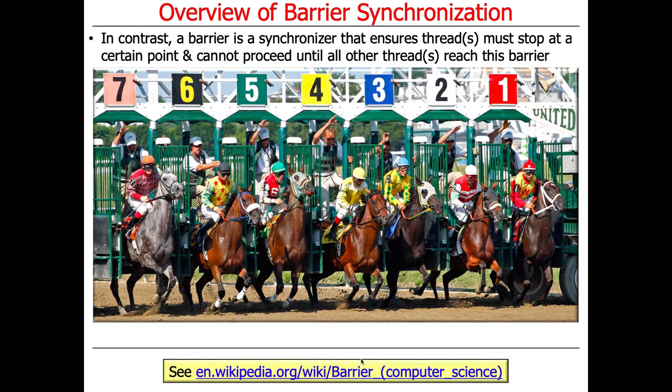In contrast, a barrier is a synchronizer that ensures one or more threads have to stop at a certain point, and it doesn't allow them to make forward progress until all the other threads reach that particular point. The key point is you've got multiple threads involved, and they all have to wait, and then they can all proceed in one fell swoop.